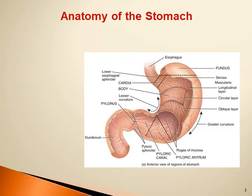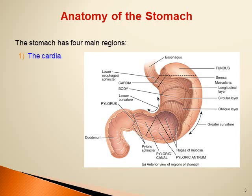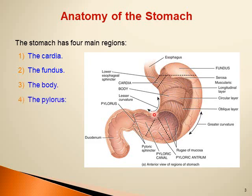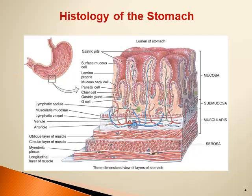First, let's quickly remember the anatomy of the stomach. The stomach has four main regions: the cardia, the fundus in the upper part, the body which is the main part, and finally the pylorus, which is composed of the pyloric antrum and the pyloric canal surrounded by the pyloric sphincter.